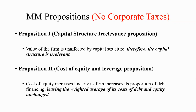Let's talk about the first proposition. It says that the value of the firm is unaffected by capital structure, and therefore the capital structure is irrelevant. By irrelevance, it doesn't mean that we don't need to understand capital structure; rather, it means that it doesn't matter by how much percentage you finance your assets in whatever mix of debt and equity — it is not going to affect the value of the firm. We can make an analogy of Proposition 1 with a cake.